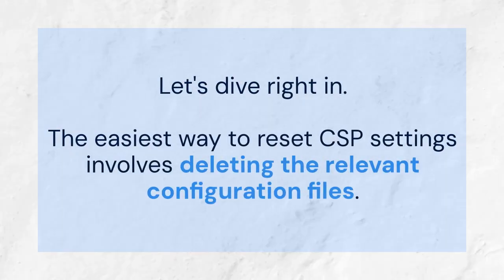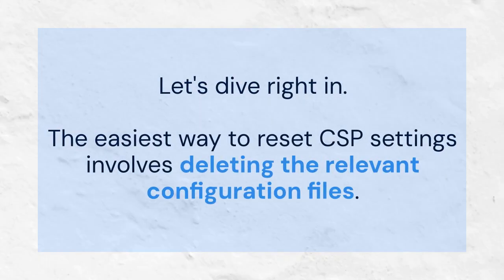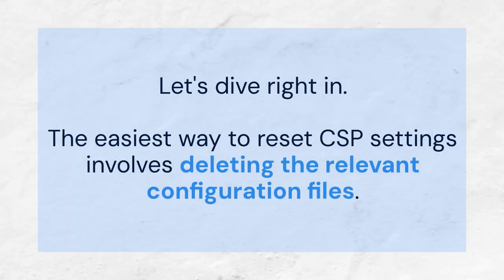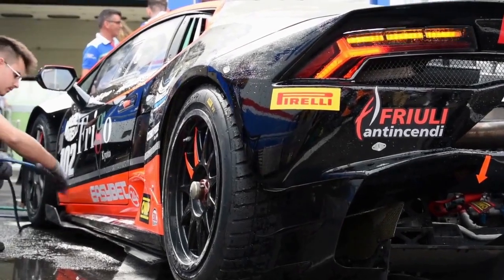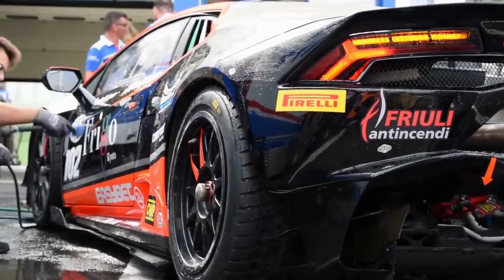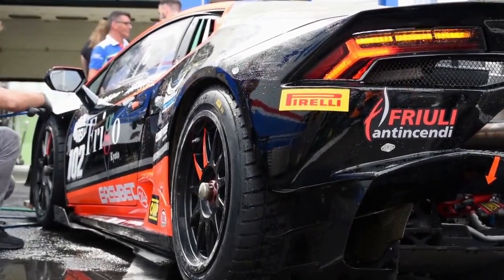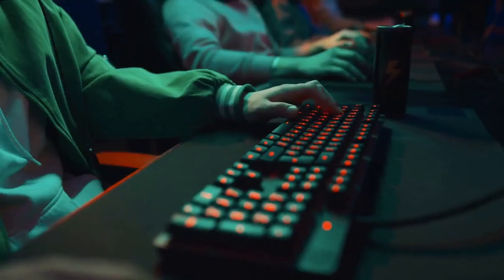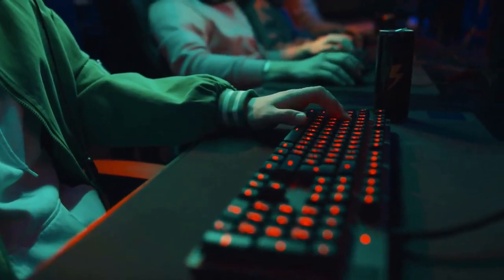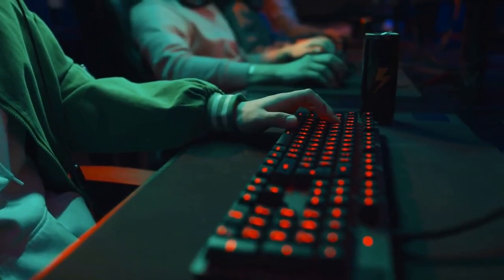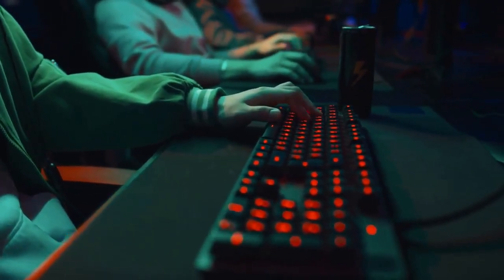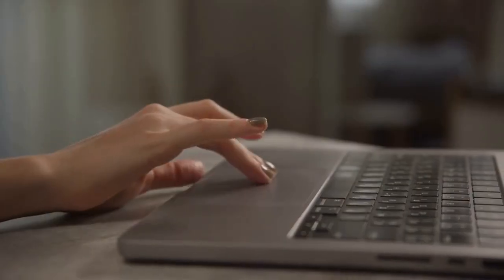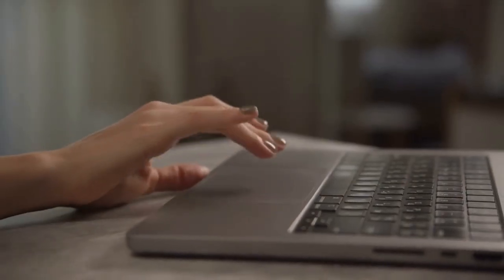The easiest way to reset CSP settings involves deleting the relevant configuration files. First, you need to locate your Assetto Corsa installation folder. This is usually in your Steam library. Right-click on Assetto Corsa in Steam, select Properties, then Local Files, and finally Browse. This will open the game's main directory.